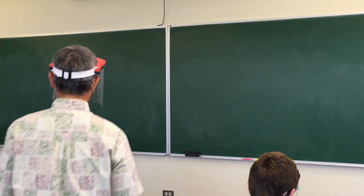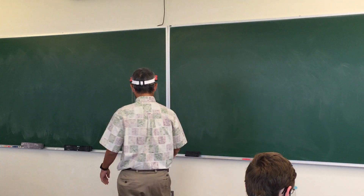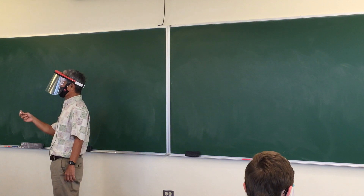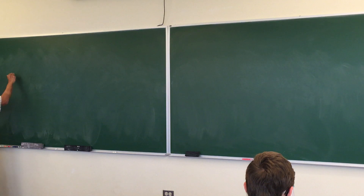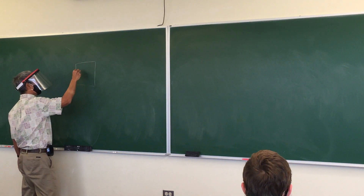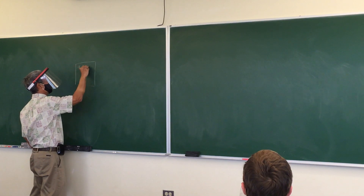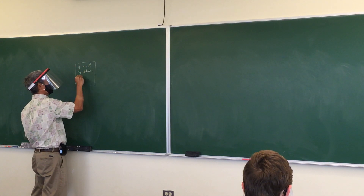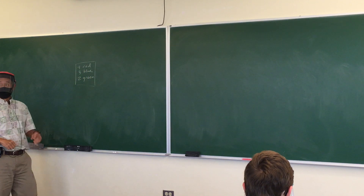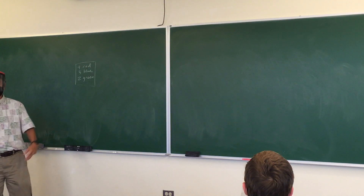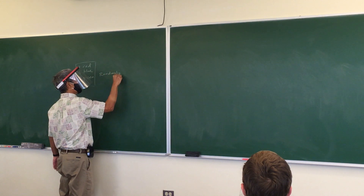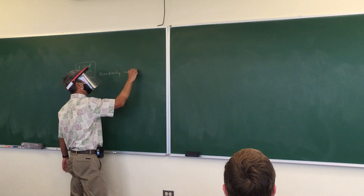Let's look at our problem. So the first problem: you've got a box containing three red balls and five green balls. Actually, let's say you have a box with four red marbles, three blue marbles, and two green marbles. I'm going to randomly select three marbles.